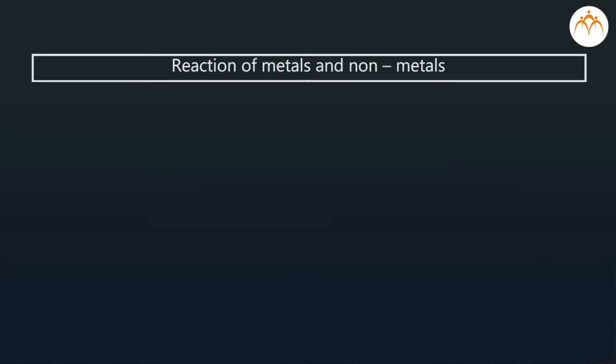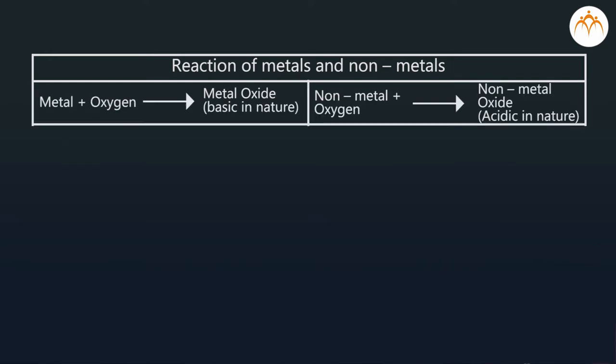Let us revise what we learnt. From the experiments we just saw, we have understood various chemical properties of metals and non-metals and the reactions that take place when these metals and non-metals come in contact with various gases, acids, and water. In summary: metal plus oxygen gives metal oxide, which is basic in nature; non-metal plus oxygen gives non-metal oxide, which is acidic in nature.